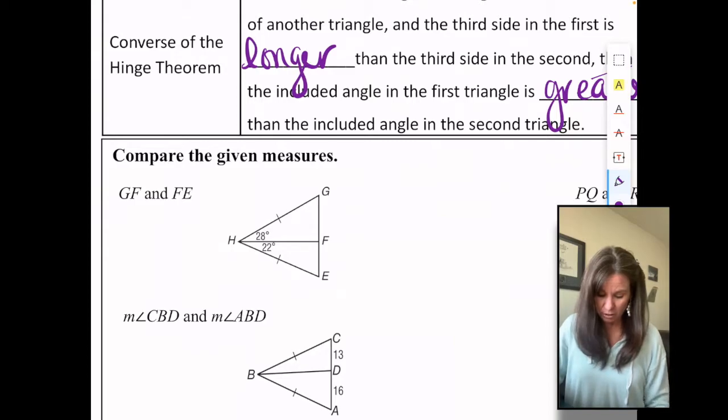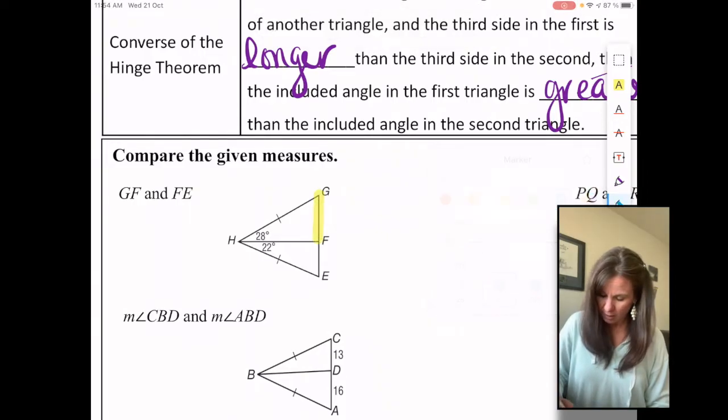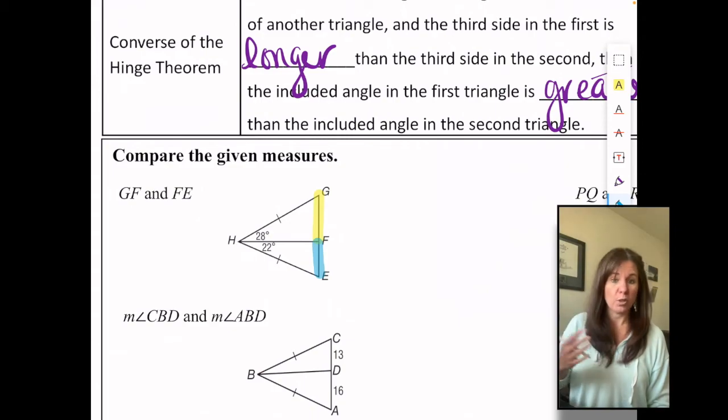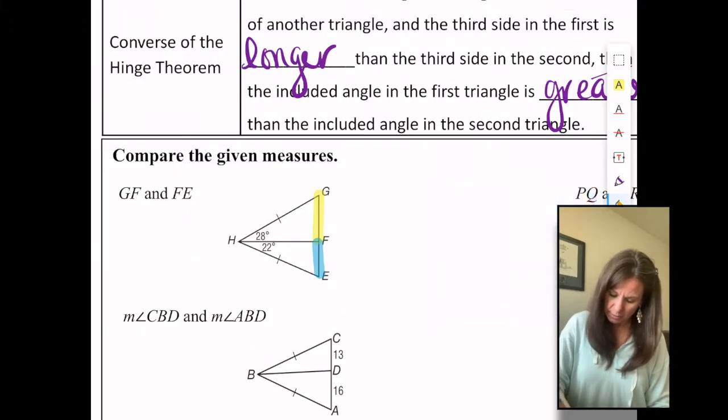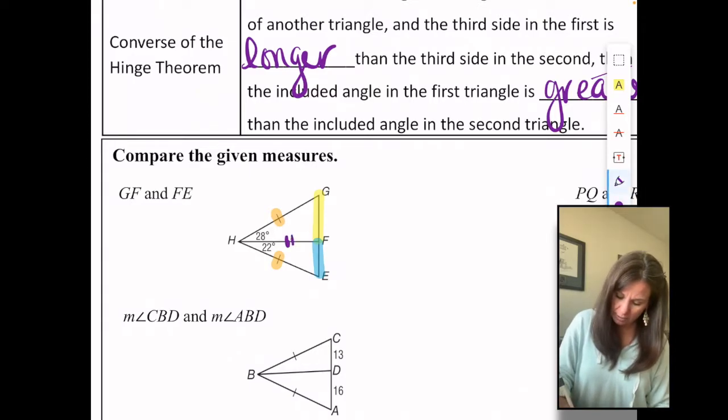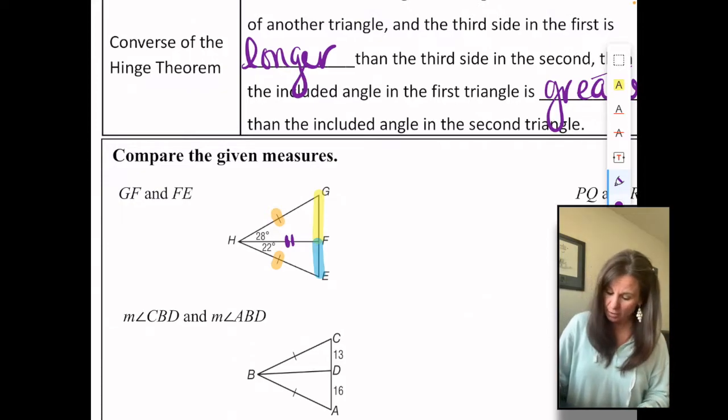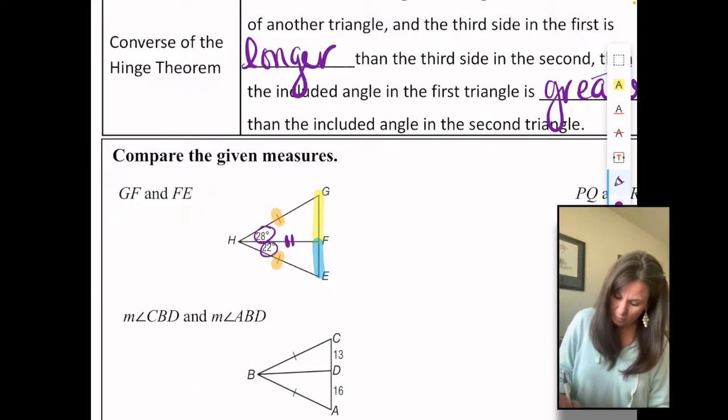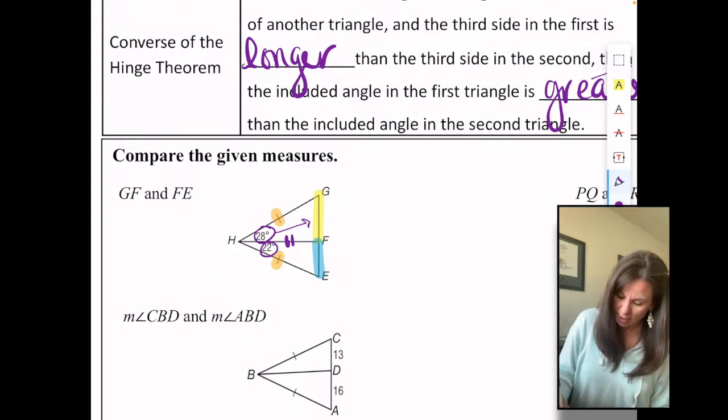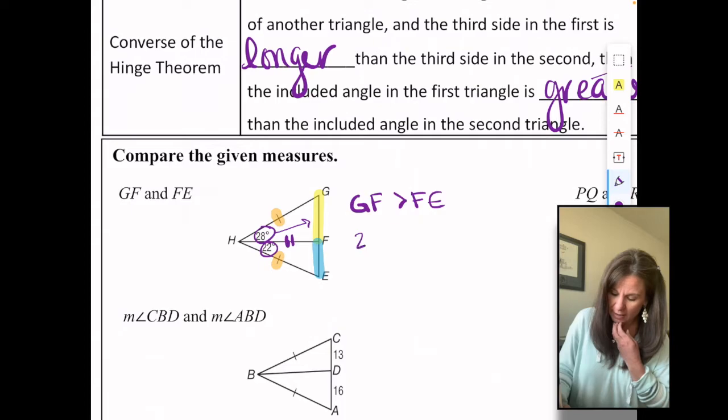Compare the given measures. So GF and FE. We want to compare GF and FE. Which one's bigger? Which one's smaller? Well, we have two congruent sides. So let's look at the congruent sides. This says those two sides are congruent and then they share a side also. See this side that they share. So we have two triangles with two corresponding congruent sides. So now we can just compare the angles. So 28 and 22. 28 is bigger. So that means GF is greater than FE because 28 degrees is greater than 22 degrees.